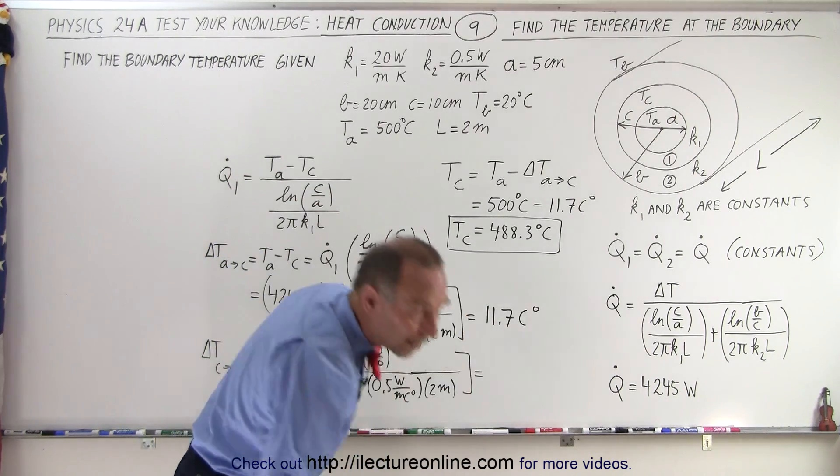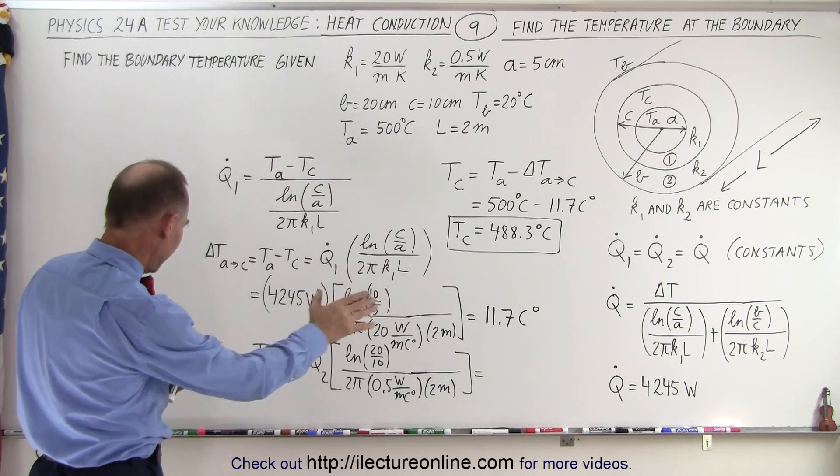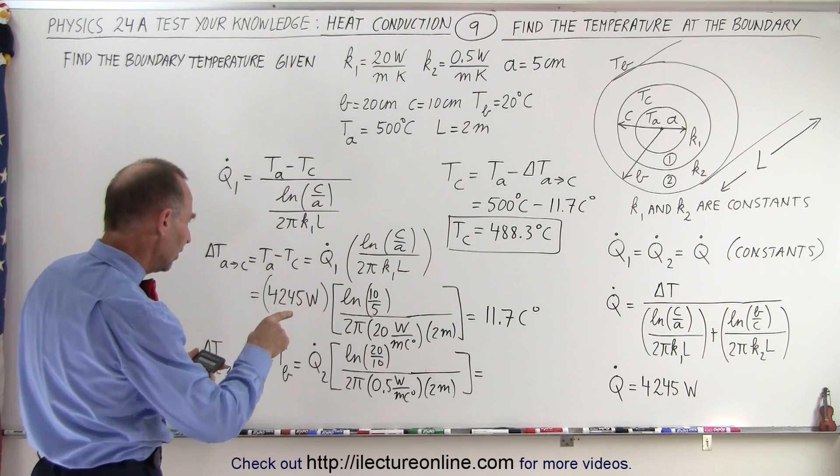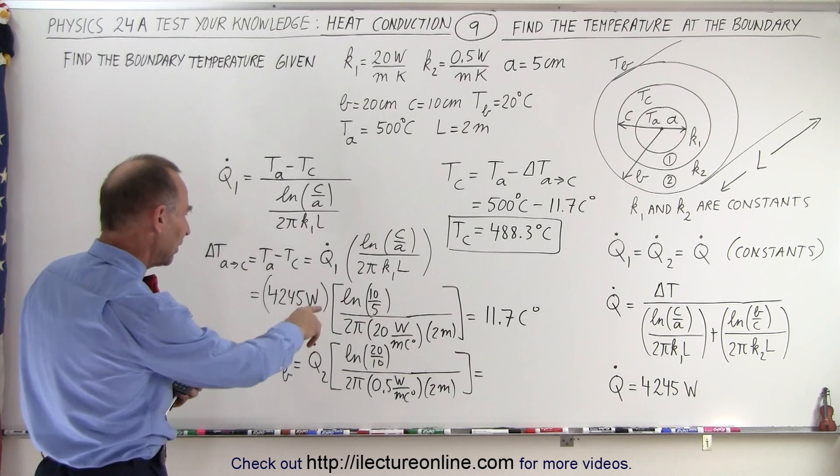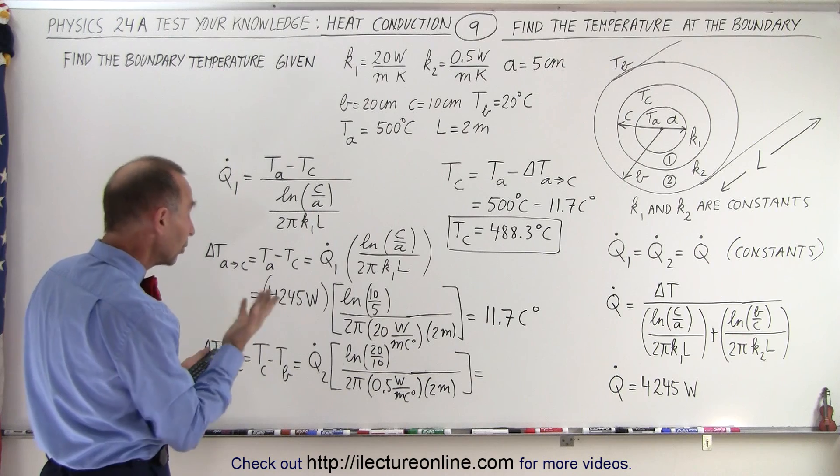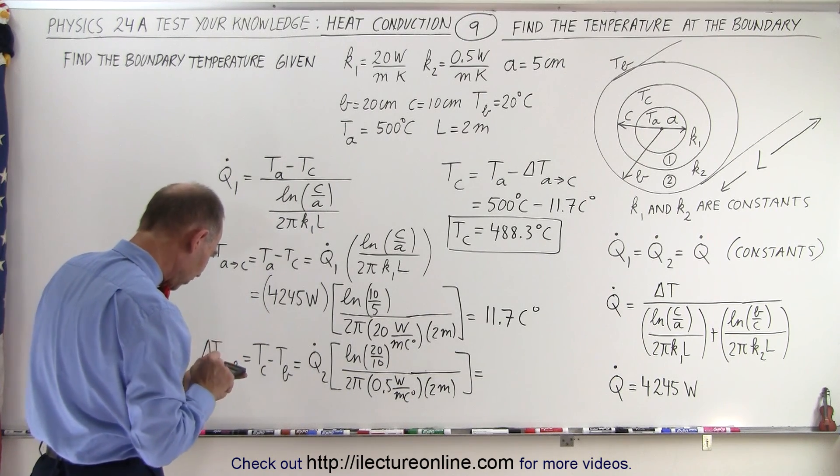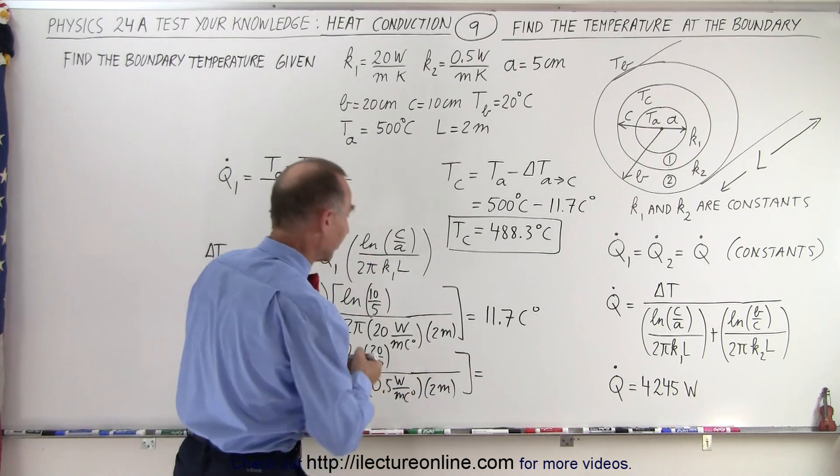So let's independently find the other result. So in other words, that would be the same 11.7 degrees, but now instead of dividing by 40, we divide by 1, which means we multiply times 40, equals, which gives us 468.3 degrees centigrade.